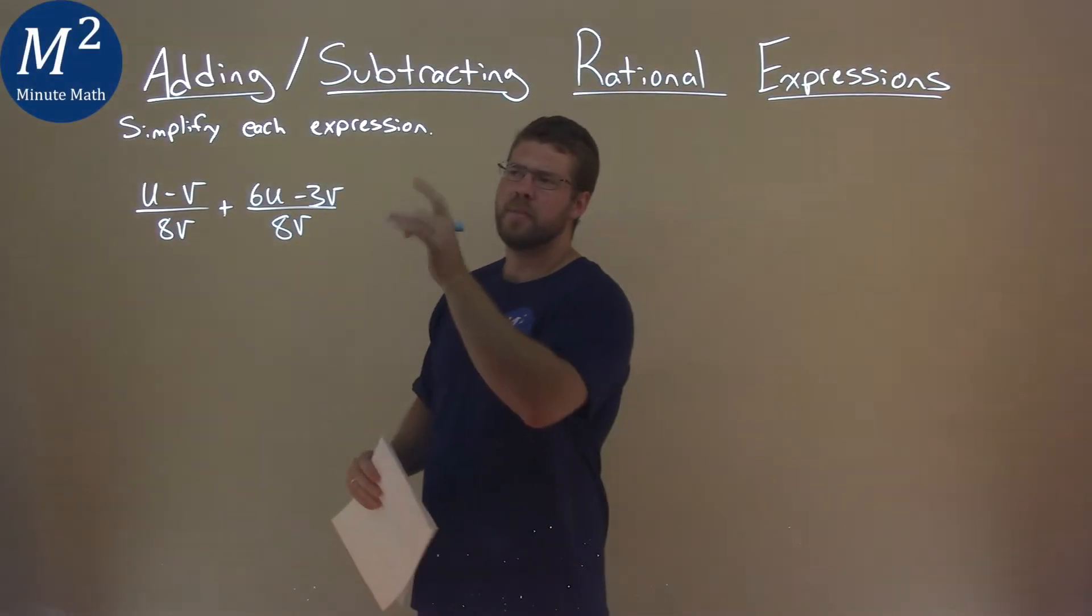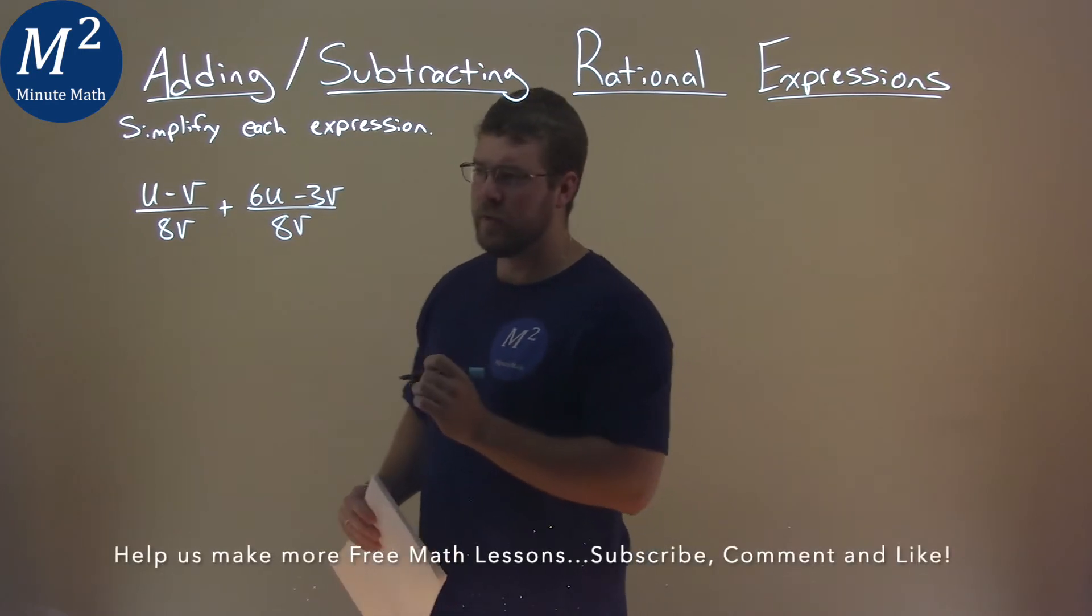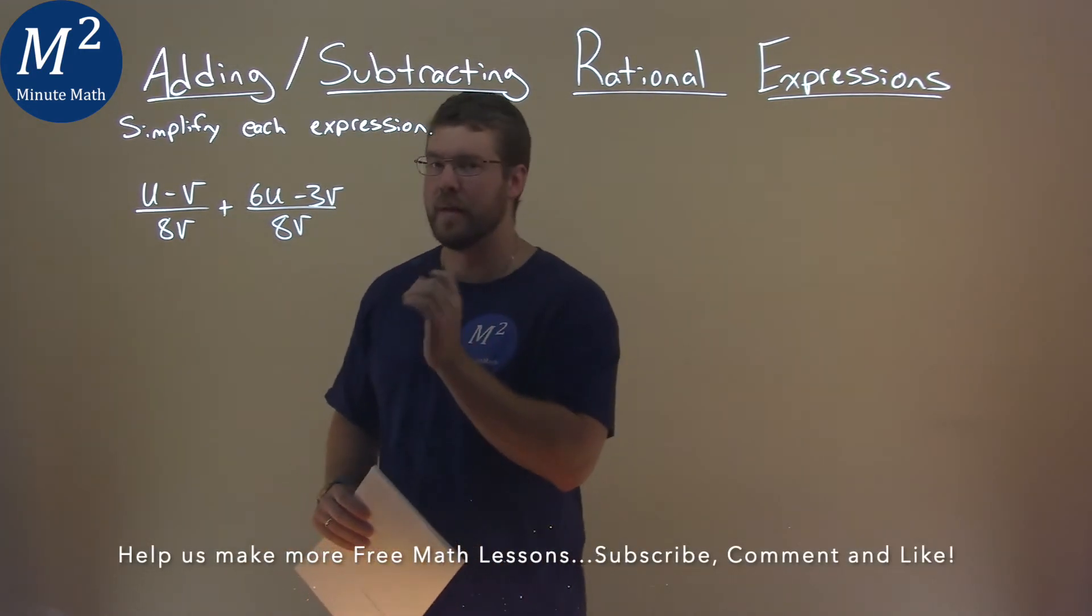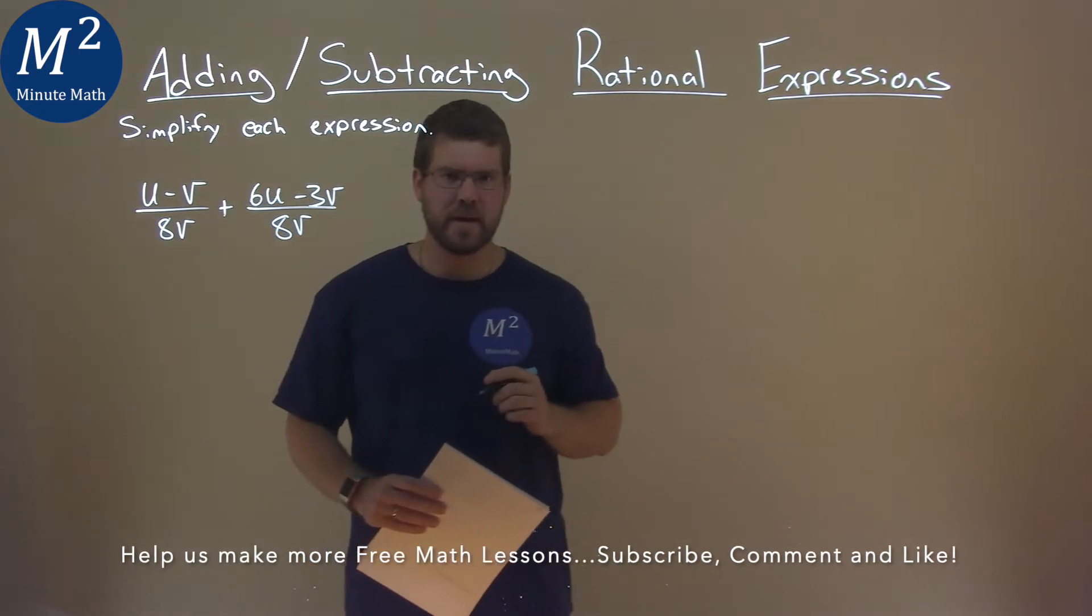We're given this problem right here: u minus v over 8v plus 6u minus 3v over 8v, and we've got to simplify this expression.